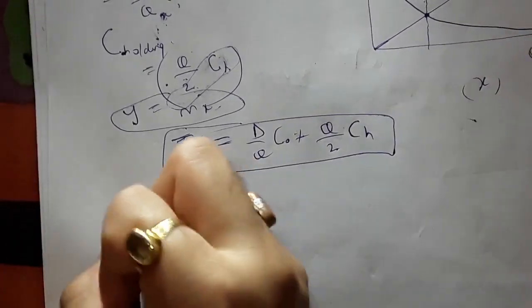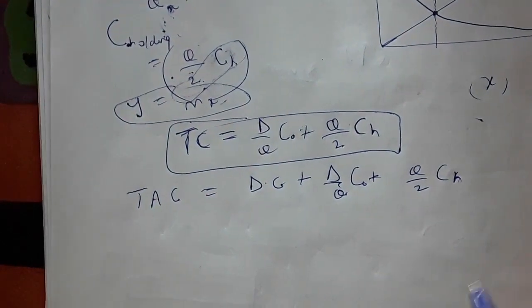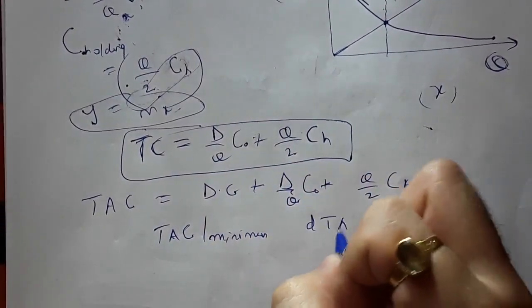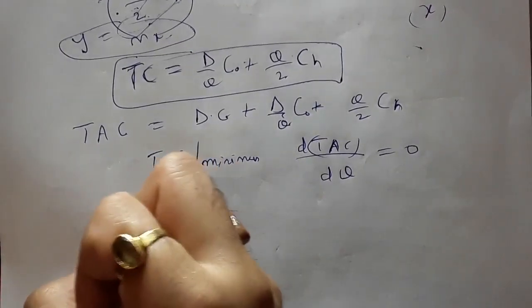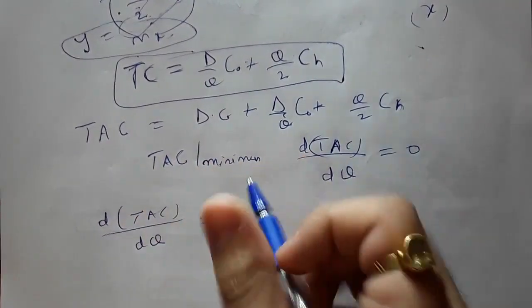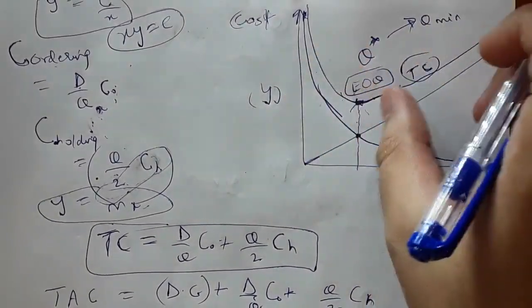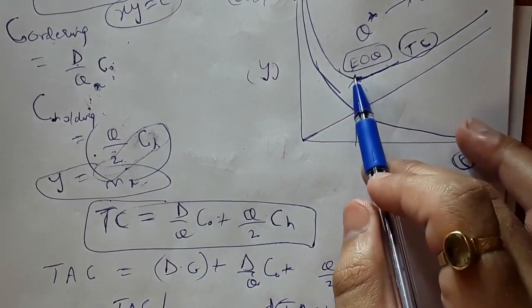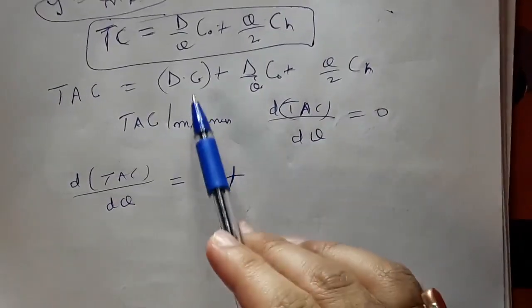To derive EOQ, the total annual cost (TAC) = D × C + (D/Q) × C₀ + (Q/2) × CH. To minimize TAC, we differentiate with respect to Q and set it equal to zero. The term D × C is constant (independent of Q), so its derivative is zero — it only shifts the total cost curve upward but does not affect the location of the minimum.